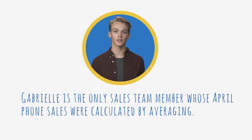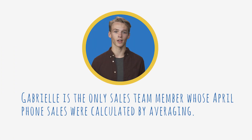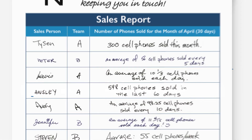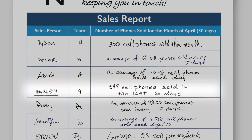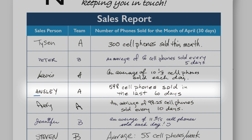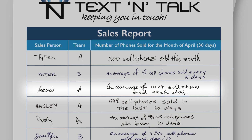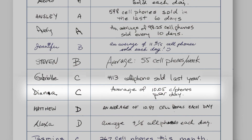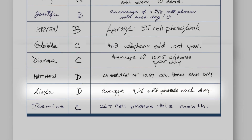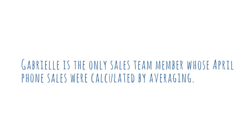Third: Gabrielle is the only sales team member whose April phone sales were calculated by averaging. Let's look at the sales report. It looks like Ainsley reported 598 phones sold in the last 60 days, which is more than the number of days in April. Eight other sales team members also report some type of average. Since Gabrielle isn't the only salesperson who reported an average, this reason is not valid and I won't select this one.